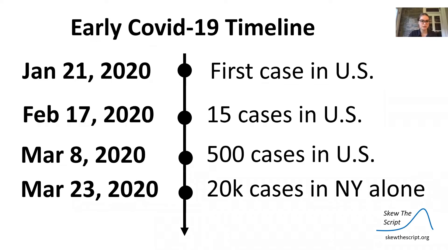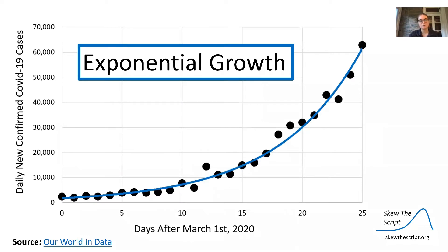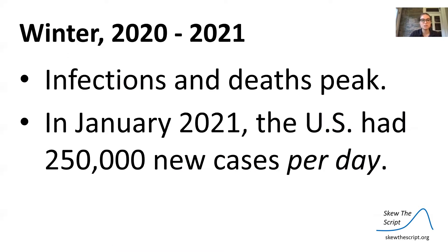In a previous lesson we talked about the early COVID-19 timeline. On January 21st we saw the first case in the United States, and then only two months later there were 20,000 cases in New York alone. The spread of COVID-19 follows exponential growth, where the disease spreads slowly and then gets faster and faster. In the winter of 2020 to 2021, in January 2021, the United States had 250,000 new cases per day.